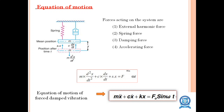The equation of motion for forced damped vibration: the forces acting on the system are the external harmonic force, spring force, damping force, and accelerating force. The equation of motion is m·x-double-dot plus c·x-dot plus k·x equals f naught sine omega t, or equivalently m·d²x/dt² plus c·dx/dt plus s·x equals f sine omega t.